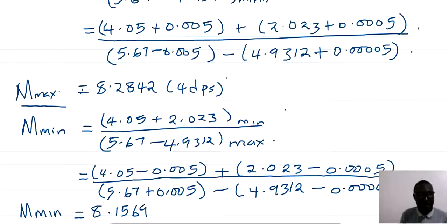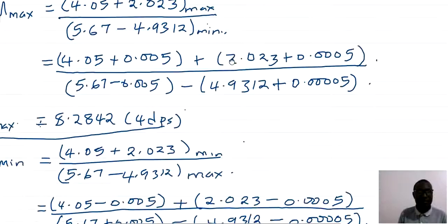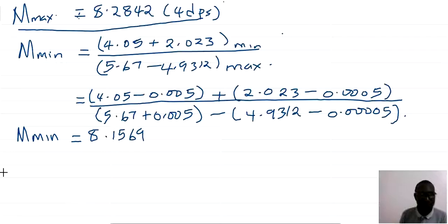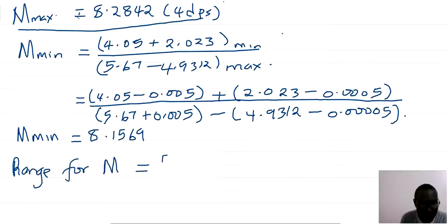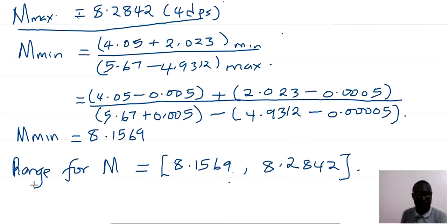So M min is 8.1569 and M max is 8.2842. The range within which M lies is written as [8.1569, 8.2842]. This is the range within which the accurate value of M lies.